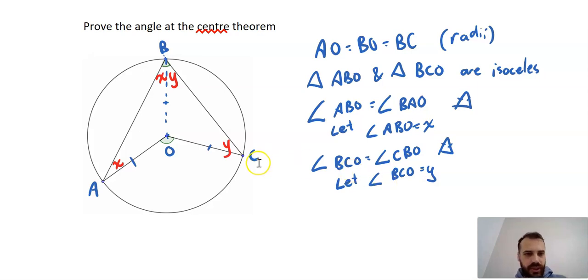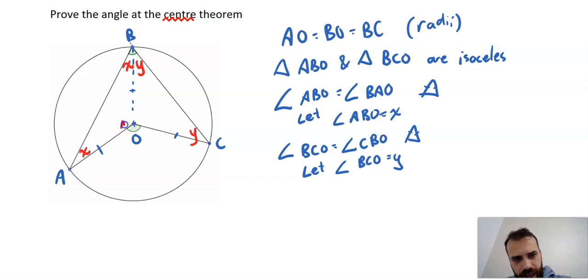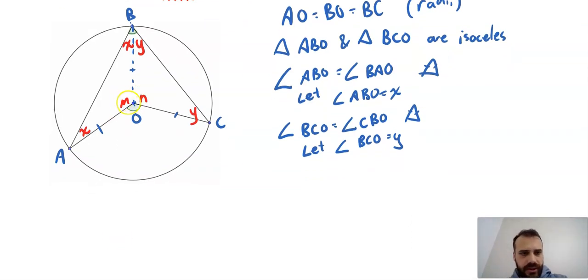Now what else can I do? Let's label this M and this N. I can say that M equals 180 minus 2X, and N equals 180 minus 2Y. Both of these use the fact that the internal angles of a triangle are 180 degrees.